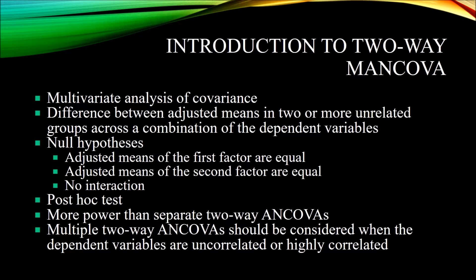Just as with ANOVA, when you have an independent variable with three or more levels — as the treatment variable does here with CBT, reality, and existential — you need to perform a post-hoc test to see where the difference is. For example, with gender having only two levels (male and female), a statistically significant result tells you the difference is between those two levels. However, with treatment, a significant p-value doesn't tell you where the difference lies — it could be between CBT and reality, CBT and existential, or reality and existential, and you could have more than one significant difference. So a post-hoc test is required.